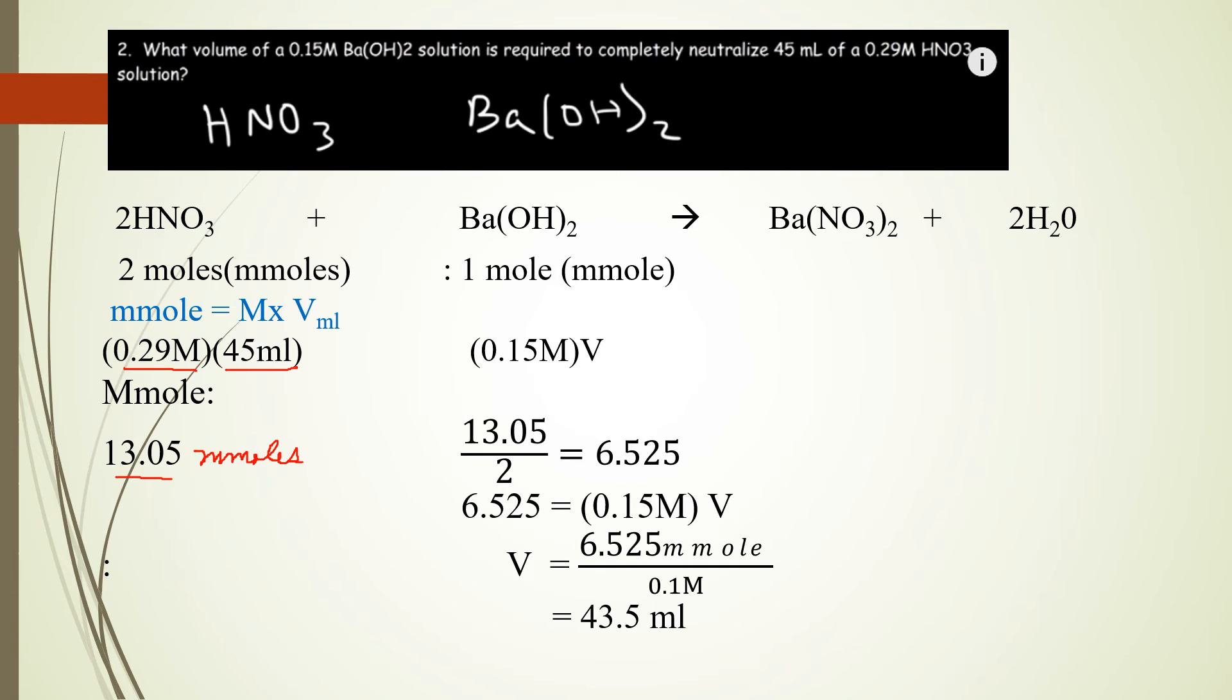How many millimoles of barium hydroxide will be needed to react with this? Remember, if this is 13.05 millimoles, you will need only half of this amount of barium hydroxide. So you will need only 6.525 millimoles of barium hydroxide.